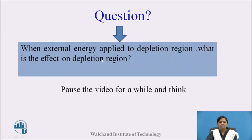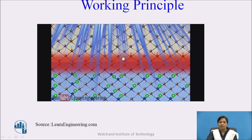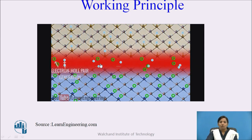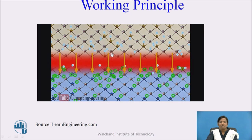When external energy is applied to the depletion region — in this case sunlight — it strikes on the depletion region and electron-hole pairs are generated. Due to photons, silicon atoms get excited, free electrons are generated, and hence holes are also generated.